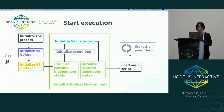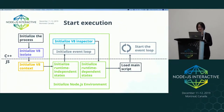After the main script is run, we'll kick off the event loop and run it until nothing keeps it open. The libuv thread pool will be created if any asynchronous file system operation is used.